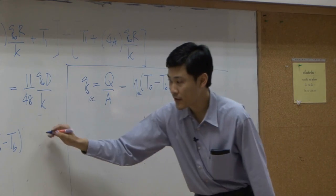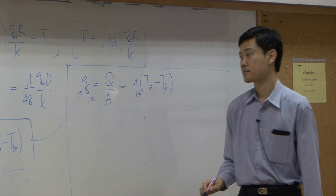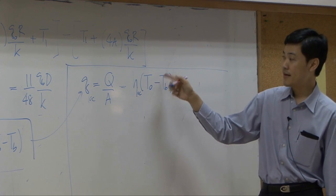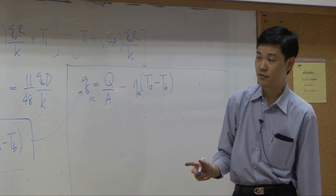Then you can take Q here up to this point and rearrange. Delta T and delta T here will cancel out.